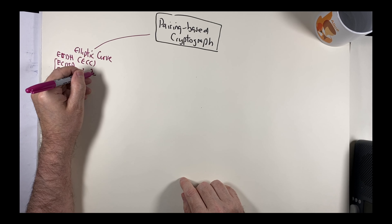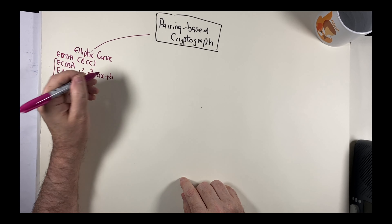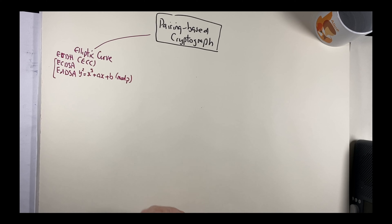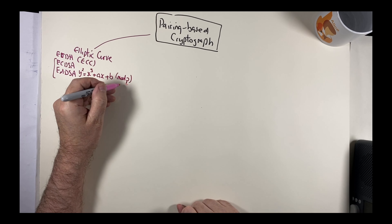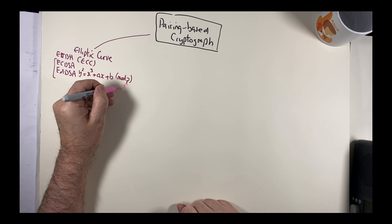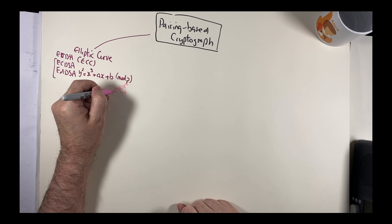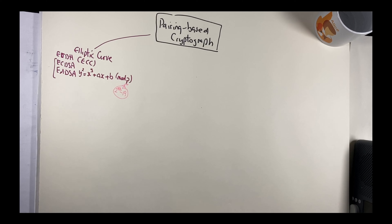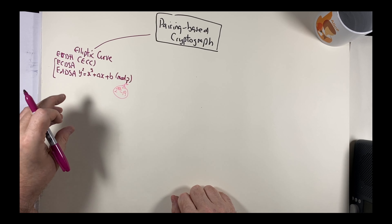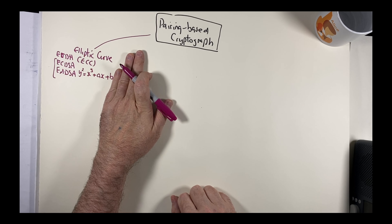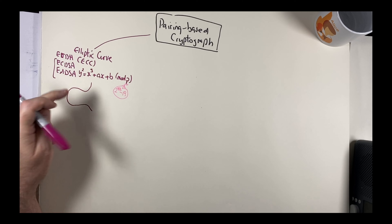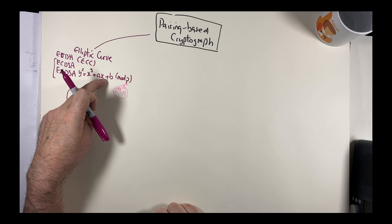Elliptic curve cryptography works by starting with an equation defined within a finite field, so we have a prime number P. For example, in Curve25519 this is 2 to the power of 255 minus 19. Using this prime and the equation, we end up with a series of points on the curve. Without the mod P, the curve looks like: Y² = X³ + AX + B.